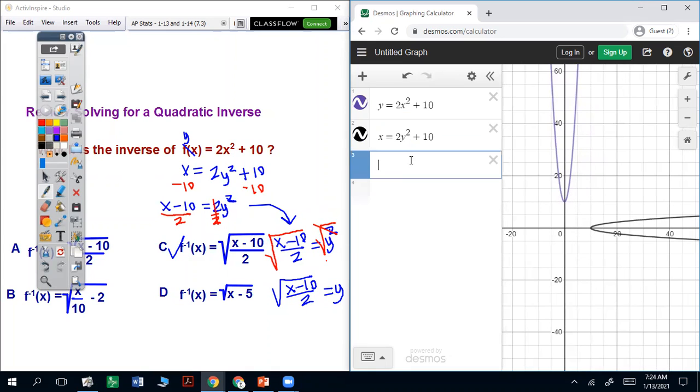So when you put in your answer choice, let's say I put in sqrt (sqrt is the square root), fraction bar x minus 10 over 2. It's only going to give you the top half because the square root only does positives. But that's the only one that lines up.